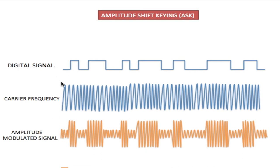The modulated signal is an exact replica of the digital signal. Digital signals go from 0 to 1, and you'll see the modulated signal doing exactly the same thing. When the receiver receives this modulated signal, it proceeds to demodulate it — assigning a 0 to the low areas and a 1 to the high areas, arriving at the original digital signal that was sent.